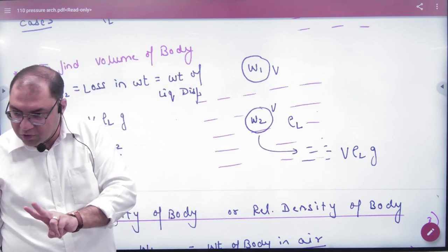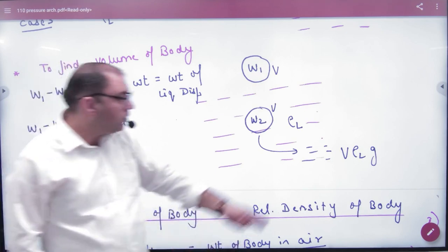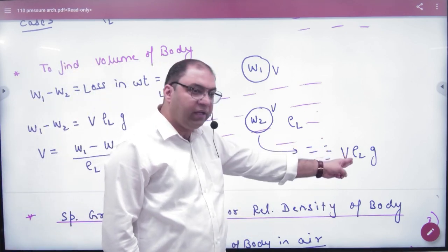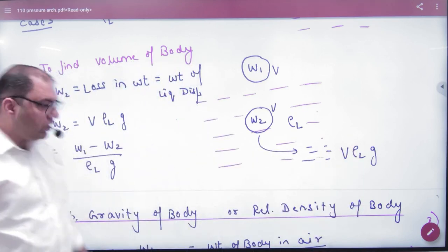V volume is the same because the whole body is submerged. So the weight of liquid, then the density of liquid. So what will we do?